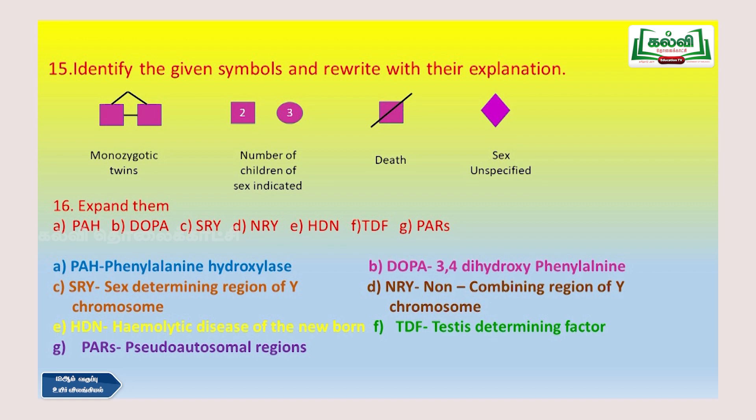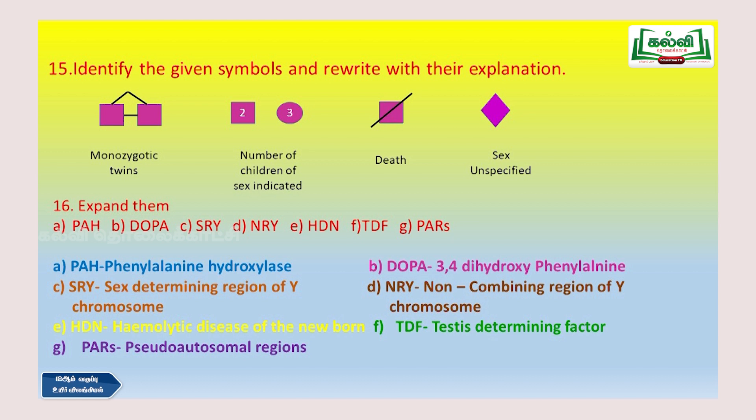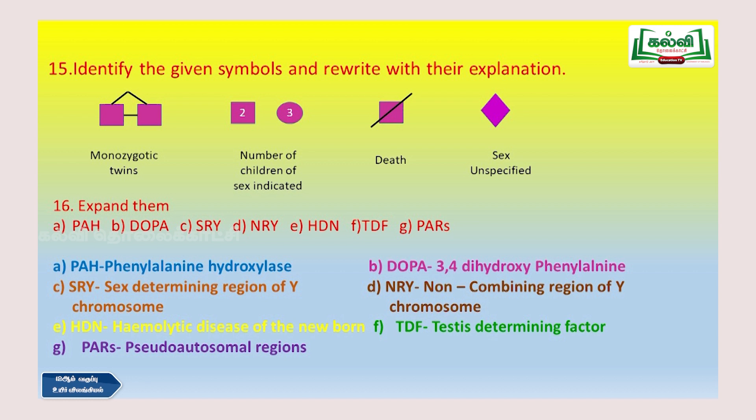The 15th question: Identify the given symbols and rewrite their explanation. These symbols come from a tabular column in your textbook for pedigree analysis. You should learn all of them as they can appear in 1-mark, 2-mark, or 3-mark questions. For example, two boxes inside a triangle represents two offspring from a single egg — that is monozygotic twins.